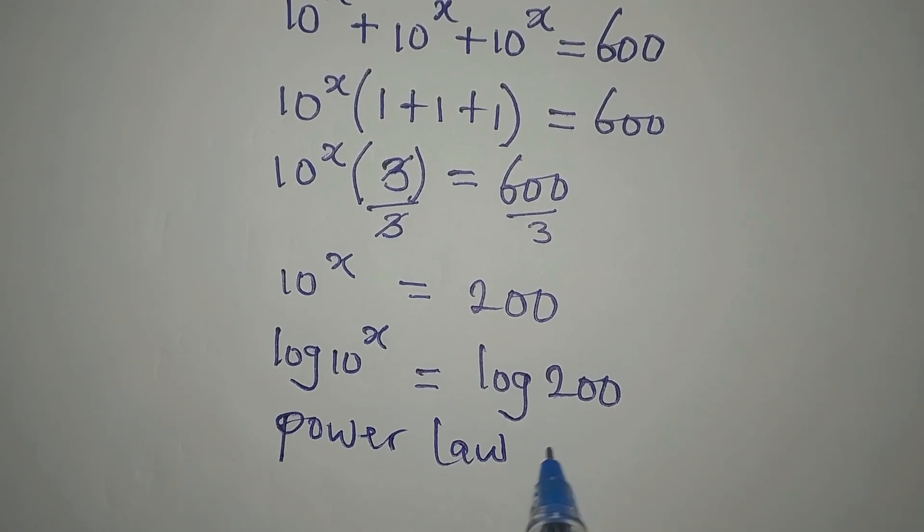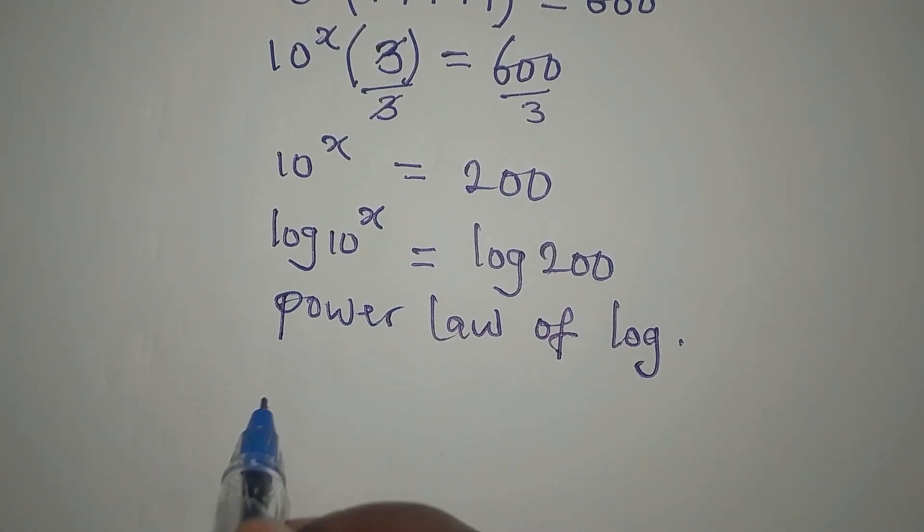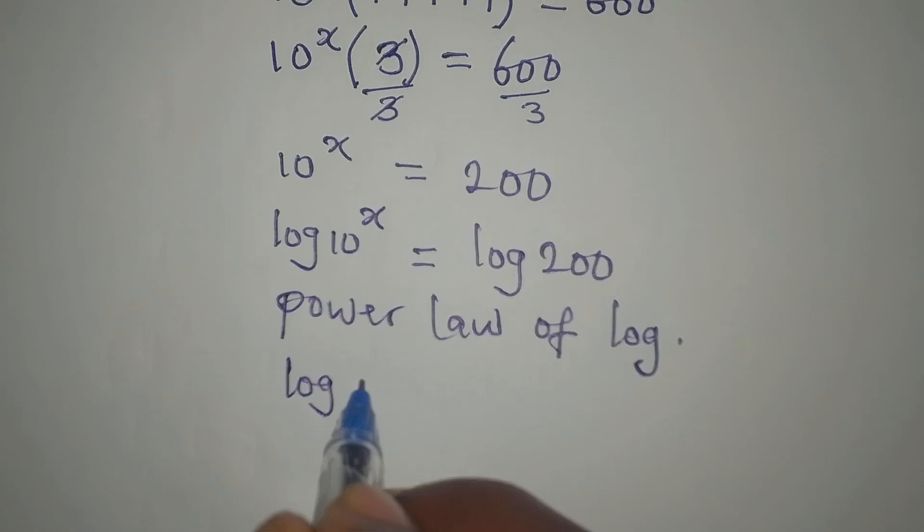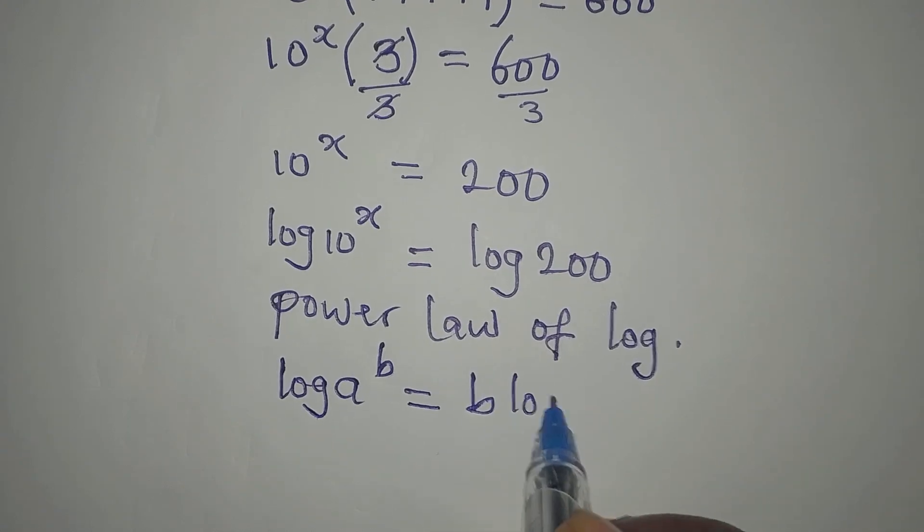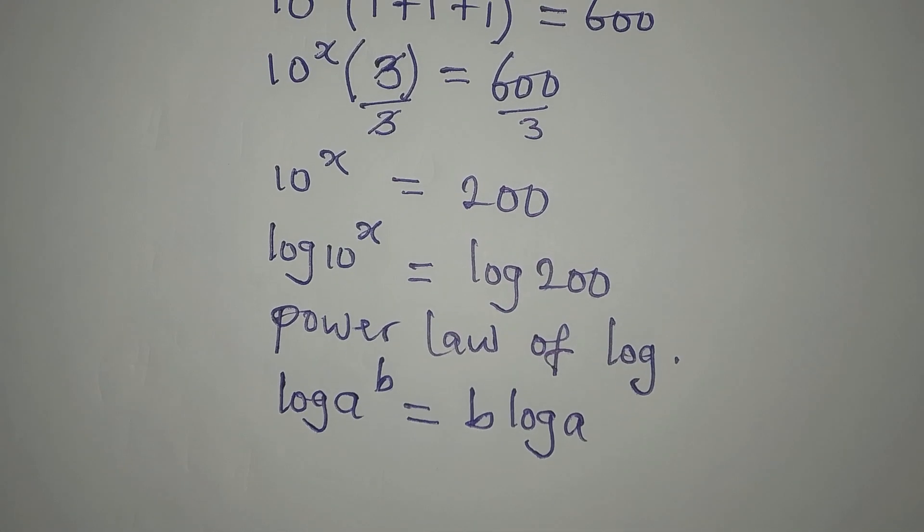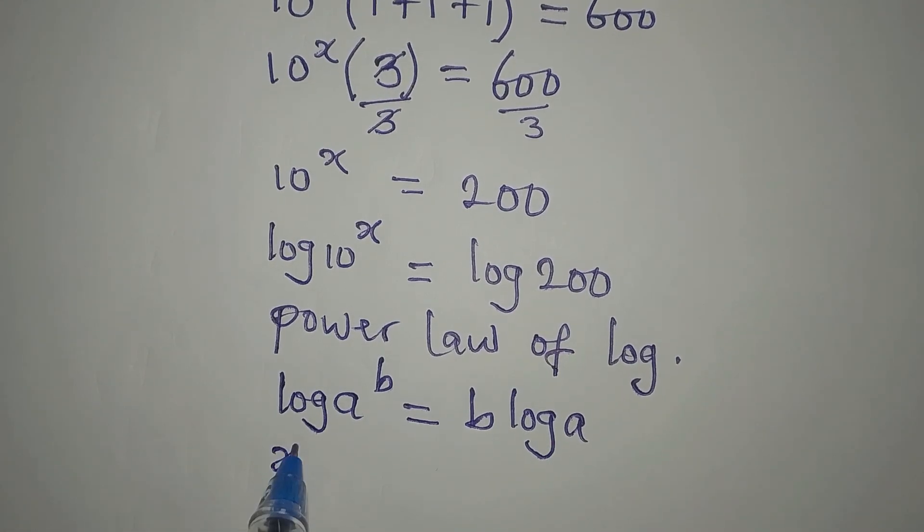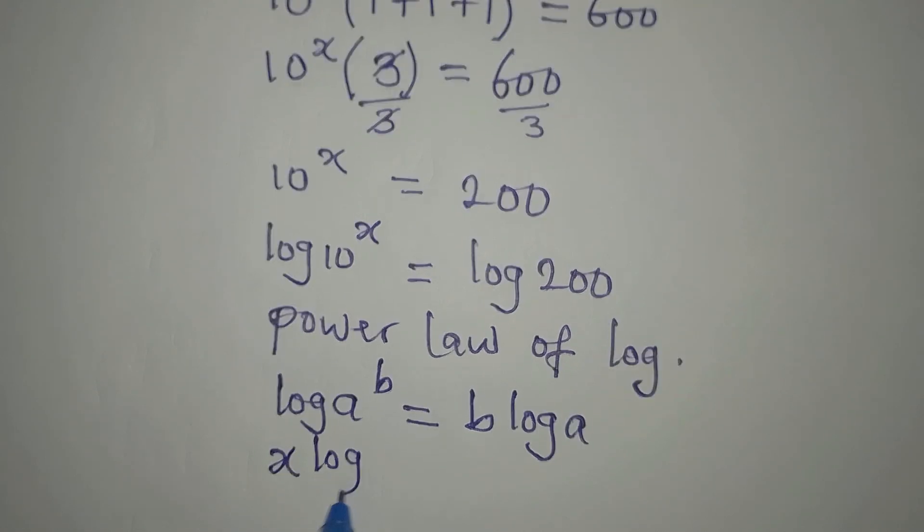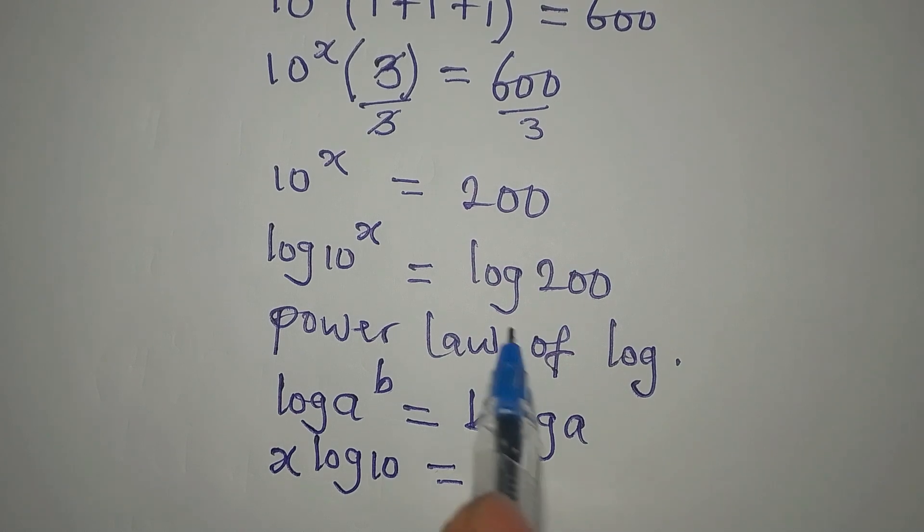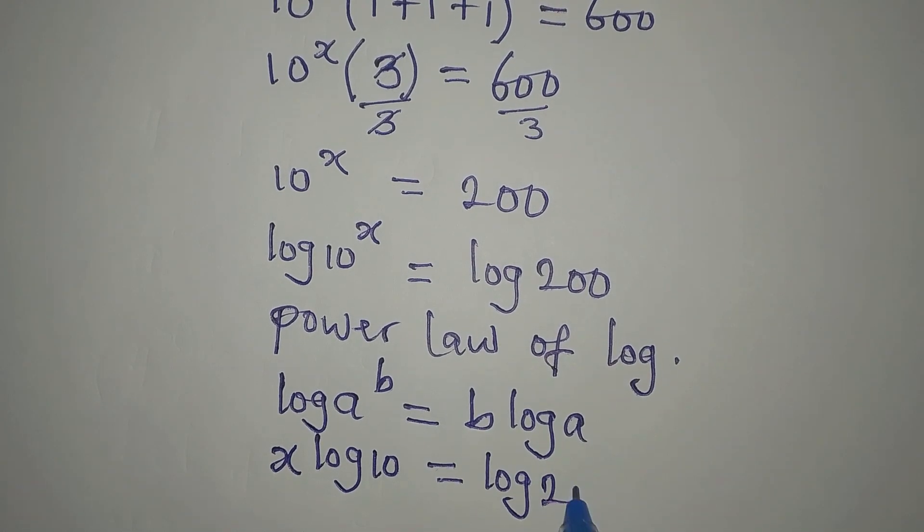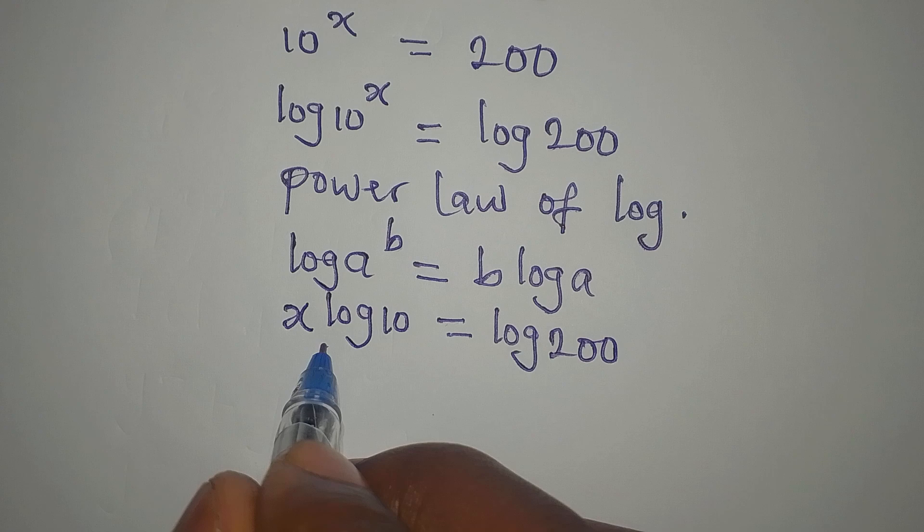The power law of logarithm says that if you have log a to the power of b, this is the same thing as b log a. This right here is in this form, so I will write it in this form so that x comes here and I have log 10, and this is equal to log 200.